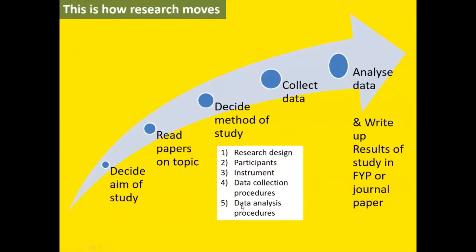Let's see research in the whole picture — this is how research moves. First, you decide the aim of your study, aims and objectives. Then you look at the keywords inside there, which tell you what keywords to use and what papers to read, because you must know something about each keyword. The keywords inside the aims and objectives are what we call the constructs or the variables — things we collect data on. They also tell you what kind of method to use for data collection.